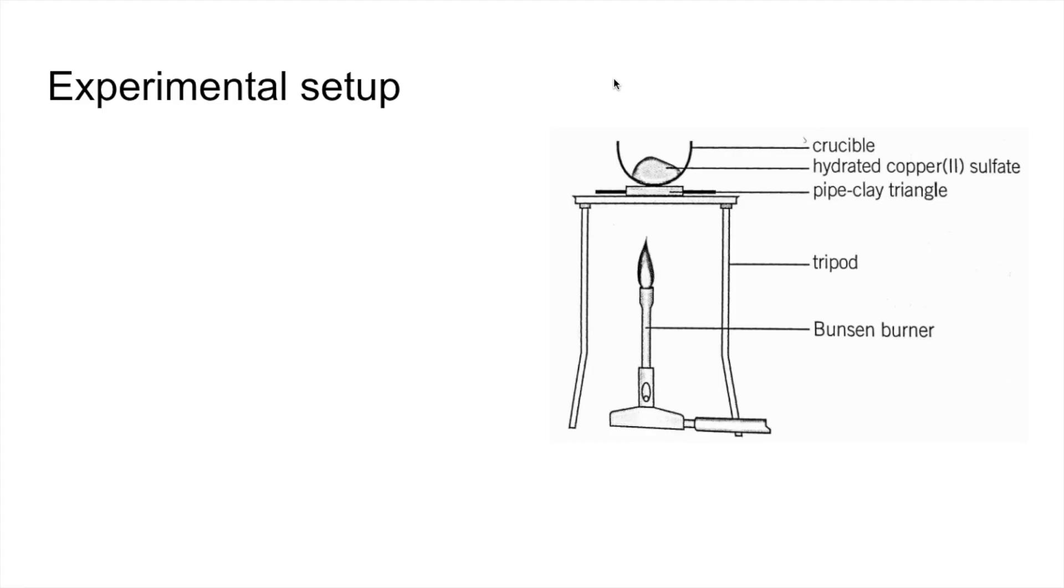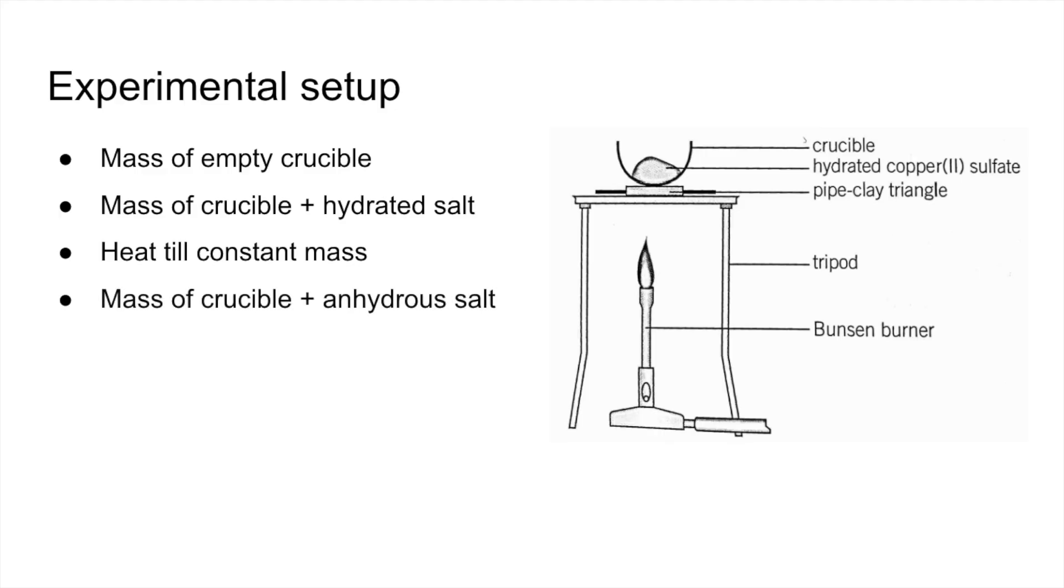The data you'd need to collect would be the mass of the empty crucible. You'd need to know the mass of the crucible with the hydrated salt in. You'd heat that up to a constant mass, so obviously that means all the water's gone. You'd weigh the crucible again, but this time it's got the anhydrous salt in.